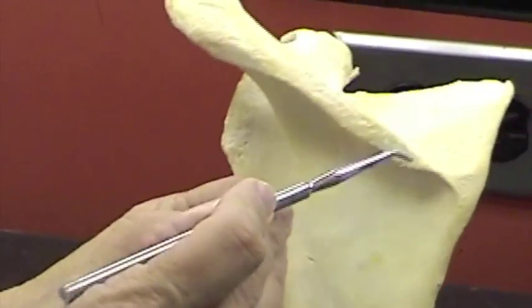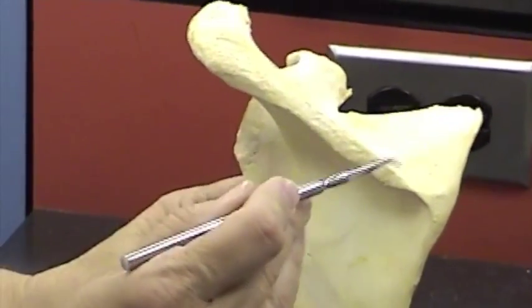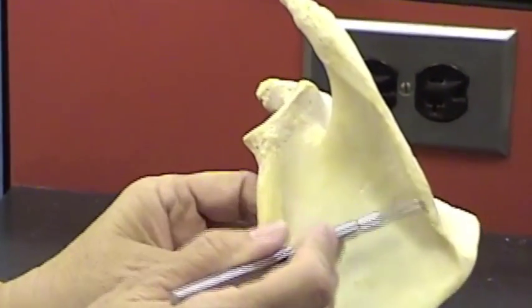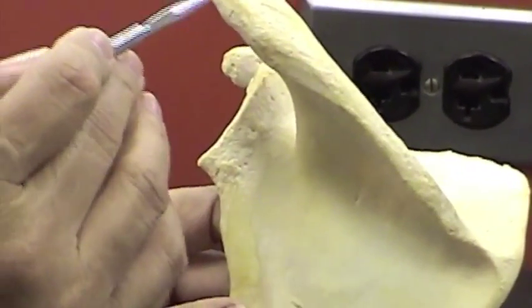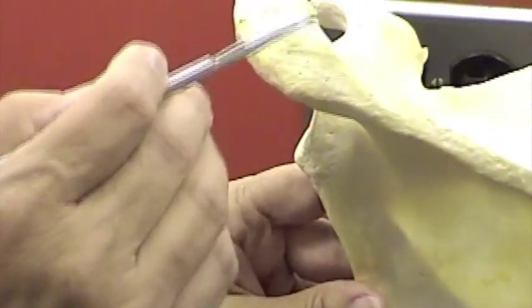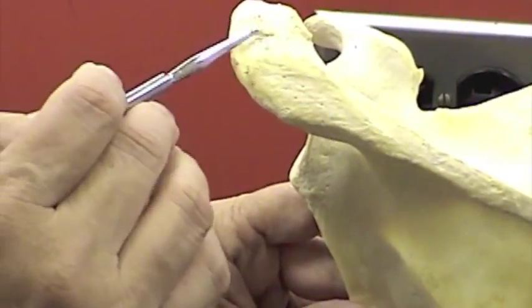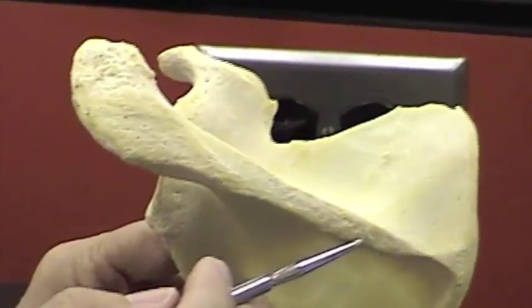Next, we have the scapular spine. You can see that it rises up here. That's the scapular spine. The scapular spine terminates in the acromion process. This is the acromion process, the termination of the scapular spine.